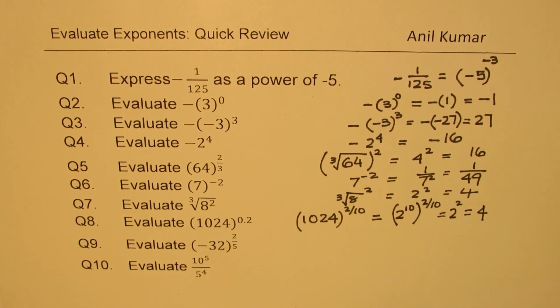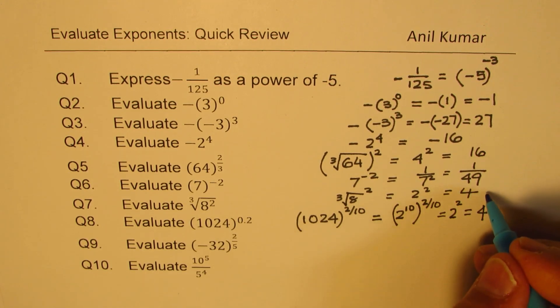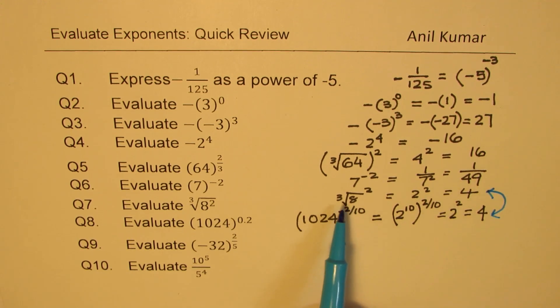Now here is a very interesting thing which you observe. In a multiple choice question, I could give you these two options. Are they equivalent or not? So cube root 8 squared is same as 1024 to the power of 0.2.